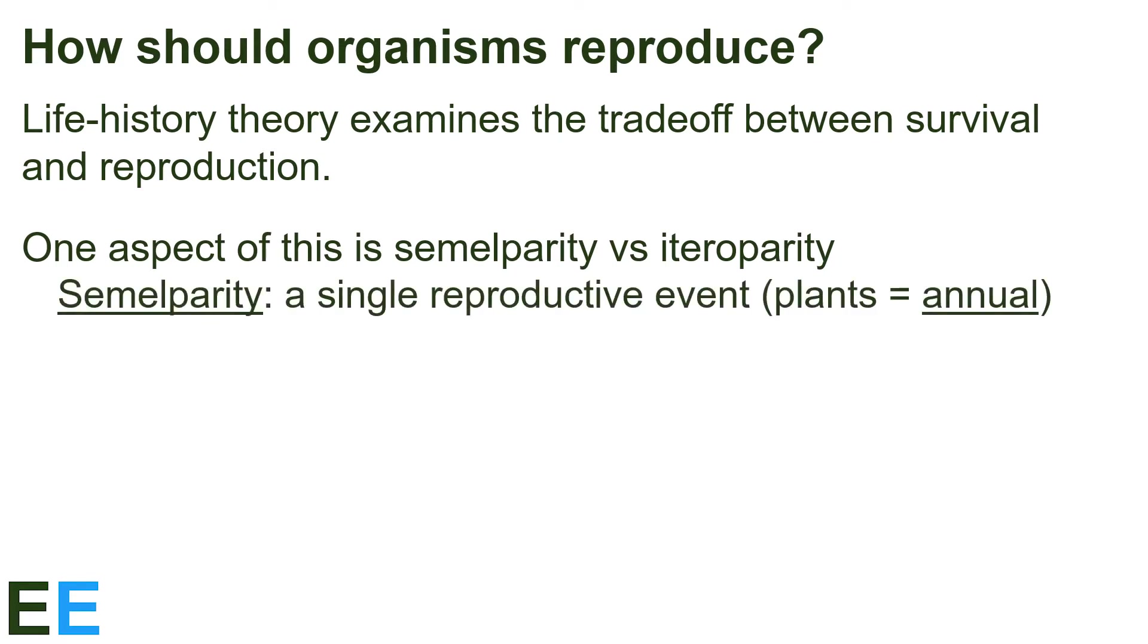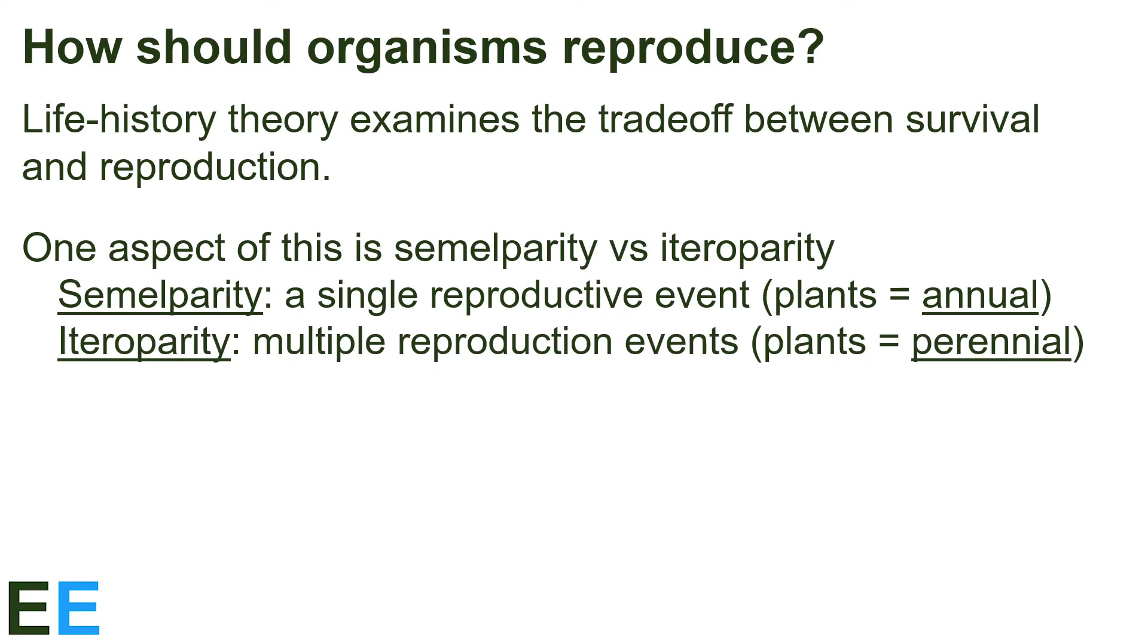Semelparity describes a reproductive strategy in which organisms undergo a single reproductive event during their life, whereas iteroparity describes a reproductive strategy in which organisms undergo multiple reproduction events over the course of their lives. I should point out that the terms annual and perennial tend to be used instead when discussing plants, but the concept is the same.